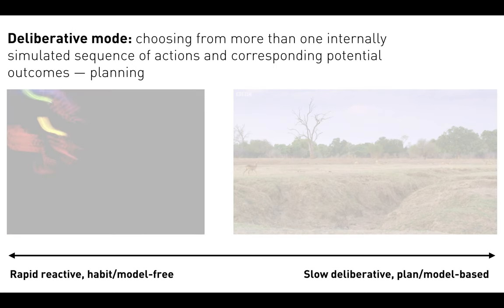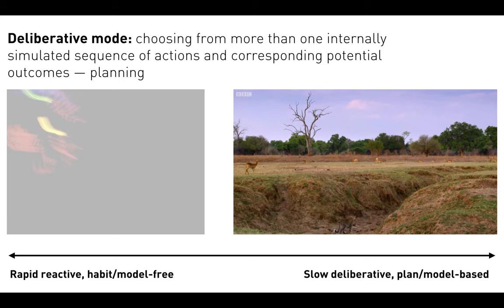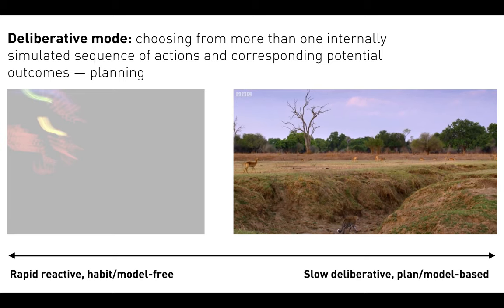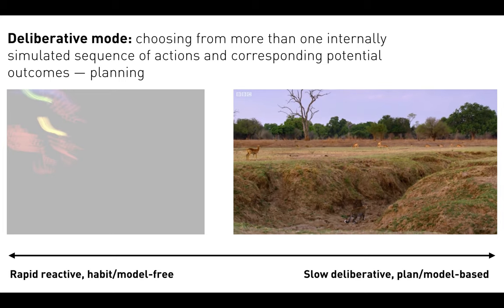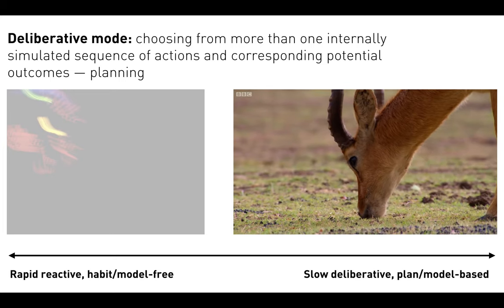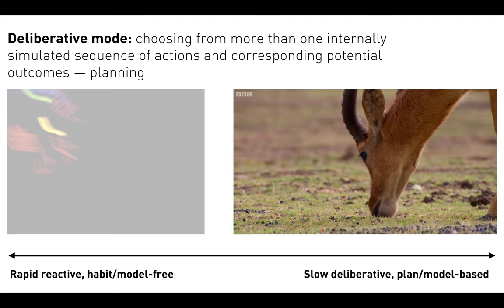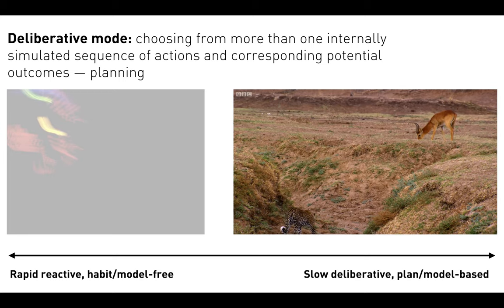At the other end of the spectrum, we have deliberative mode, also called planning or model-based thinking. Here we have a leopard hunting an impala, making use of obstacles in the environment and planning trajectories to avoid being disclosed by its target.